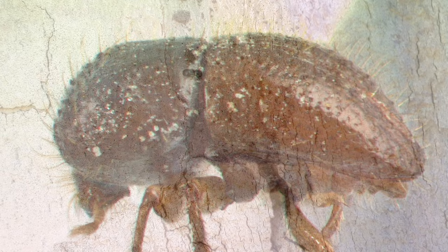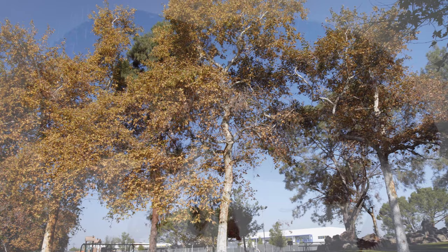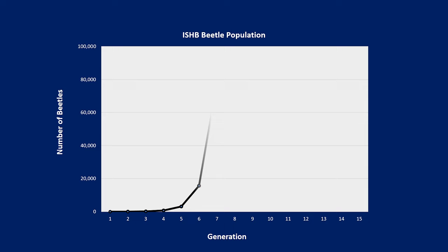Male beetles are incapable of flight and generally don't leave the gallery. The mated females do fly and may establish their own galleries in new host trees or in the trees where they developed. As with other invasive pests with no natural enemies, shothole borer populations can grow explosively. With a survival rate of just 10–20% of females per brood, the population of beetles can go from a single beetle to tens of thousands within a few generations.